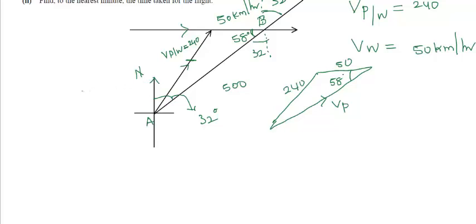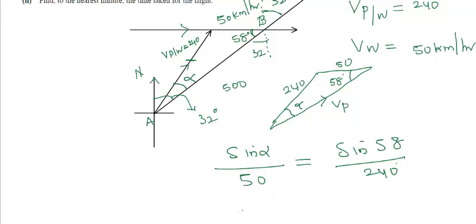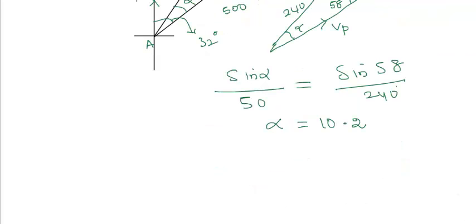First let's try to find this angle alpha. The whole angle is 32 degrees and we have to find the small angle. We can use sine rule here. Sin alpha over 50 equals sin 58 over 240, which gives alpha equal to 10.2.